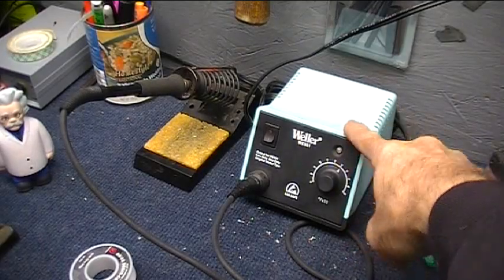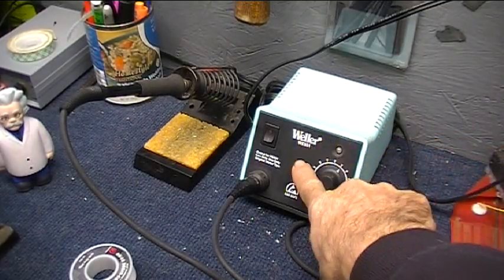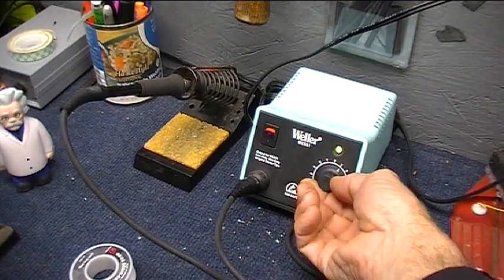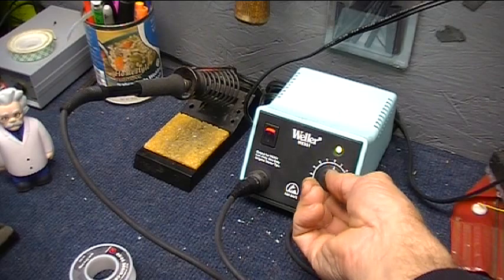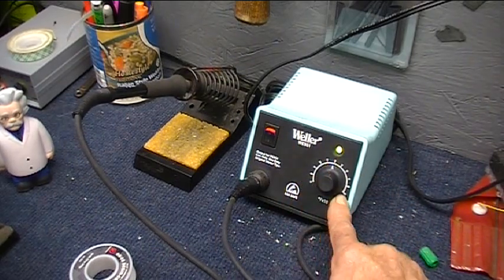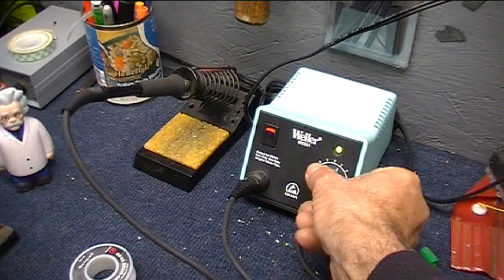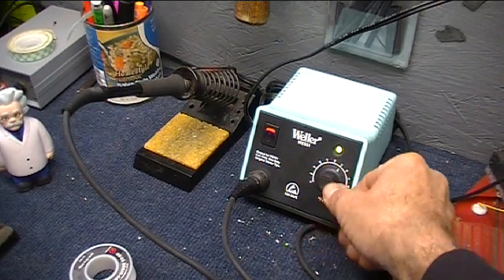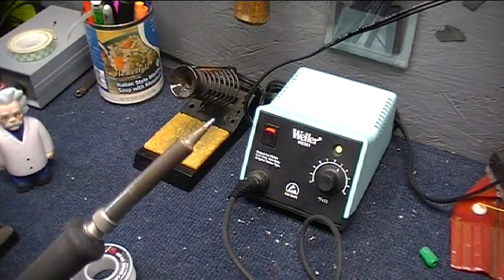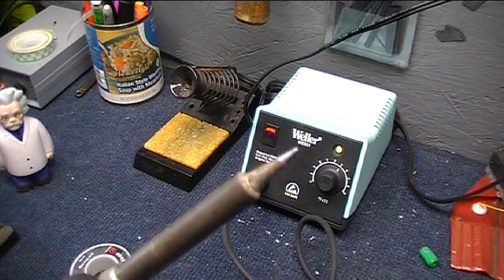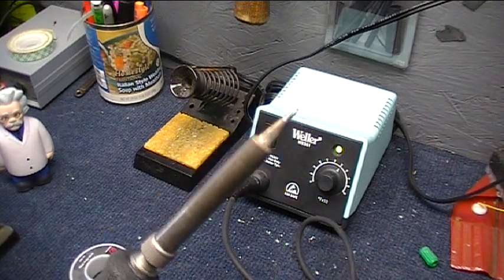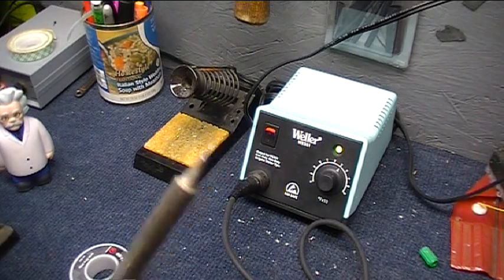This is my Weller soldering station. It's a WES-51. Let's turn it on. Its temperature is variable right here in this potentiometer all the way from 350 degrees all the way up to 850 degrees. For most of the stuff we're going to do we want about 650 degrees. This is the soldering tip right here. You can see it has a little bit of solder on it. That's called tinning. It's a tinned tip, meaning there's some solder stuck on there.